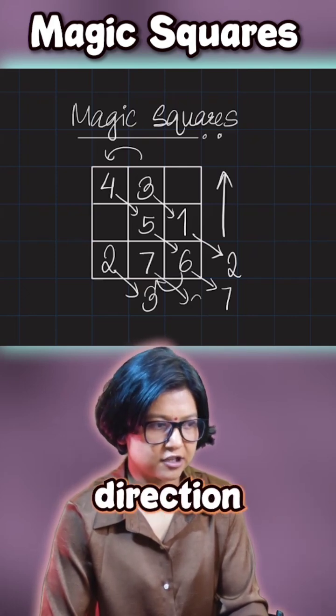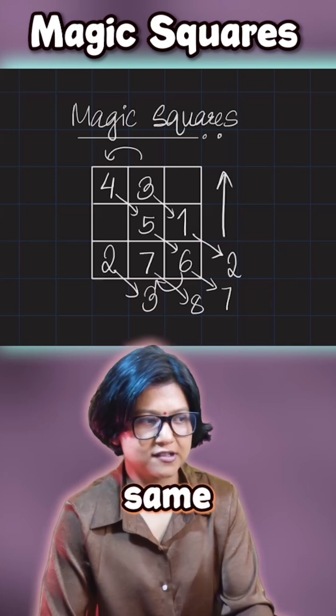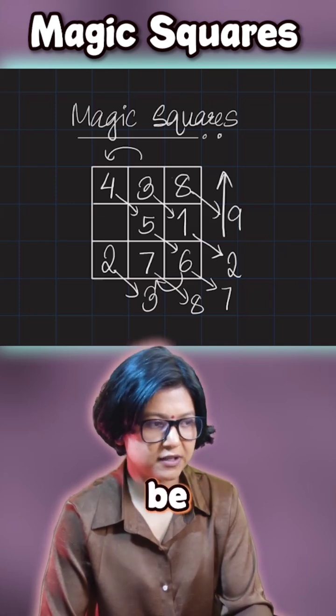And now, 7. Again, direction is the same. 8. I'll go to the same column and fill the extreme part. 9 should be here.